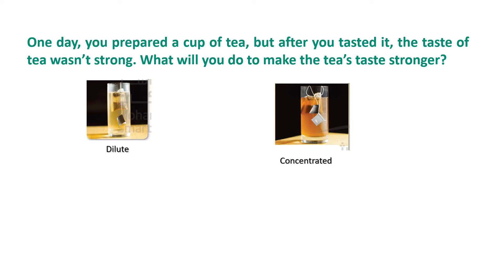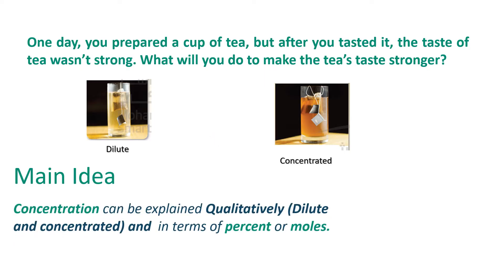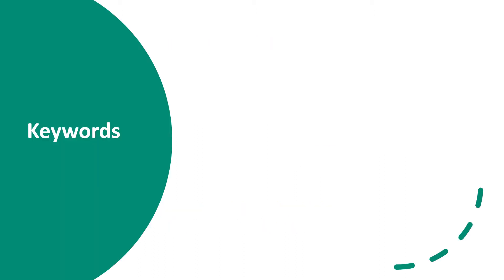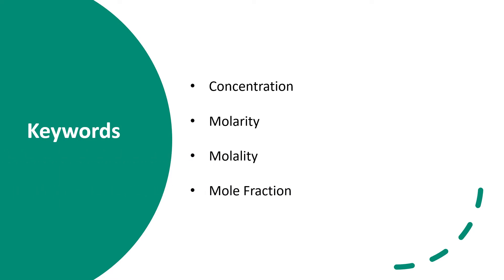The main idea of our lesson is that concentration can be explained in terms of mass or in terms of moles, and we will see more of that in the next slides. Let's begin with the keywords. The first keyword is Concentration: how much of a solute is dissolved in a specific amount of solvent or solution. We also have Molarity: the number of moles of a solute dissolved per liter of solution. Molality and mole fraction will be covered in Part 2.